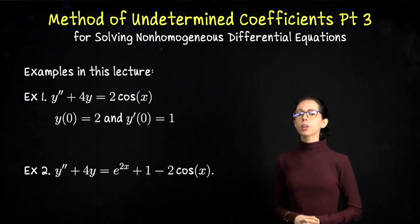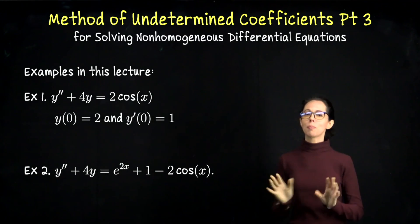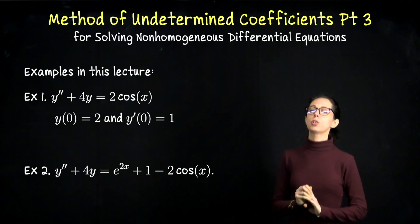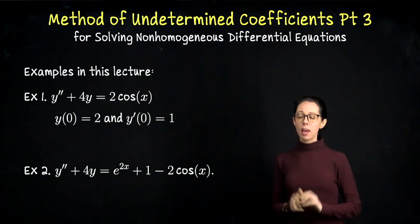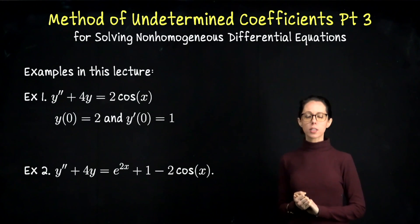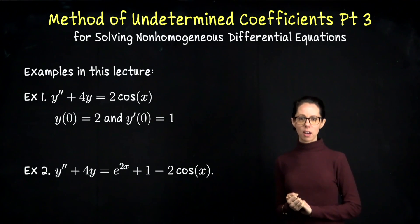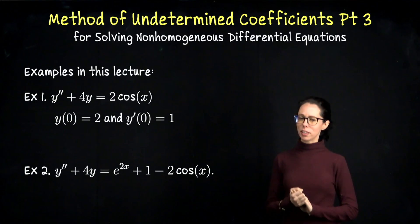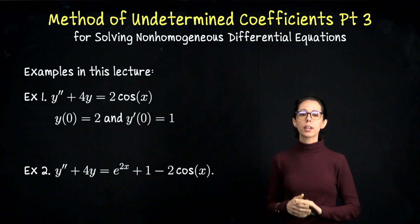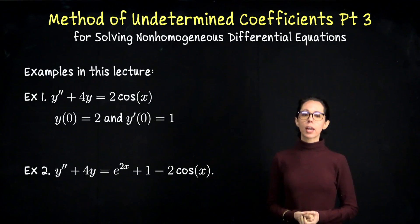This video is our third look at the method of undetermined coefficients, so make sure you've seen the first two videos before watching this one. The goal of this video is mainly to address what to do when the right-hand side of your second-order non-homogeneous linear differential equation has a trig function. That will be something we look at in example one.